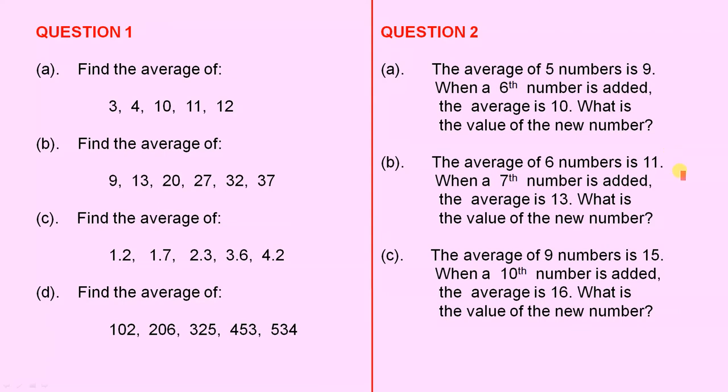Part B: The average of 6 numbers is 11. When a 7th number is added, the average is 13. What is the value of the new number?